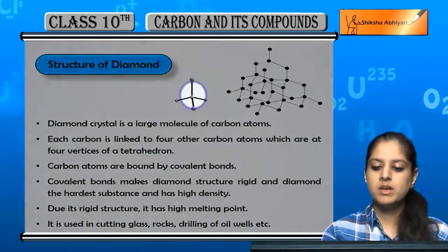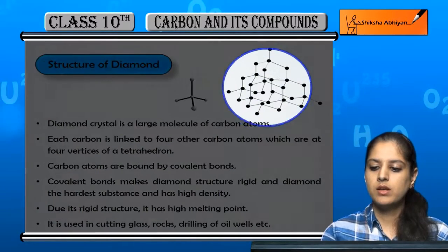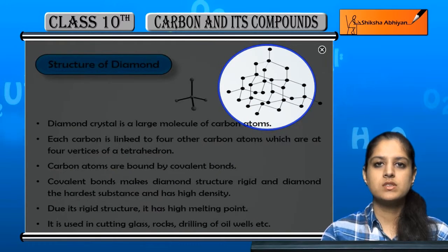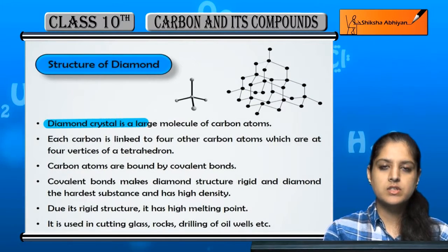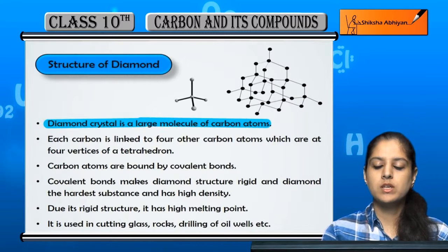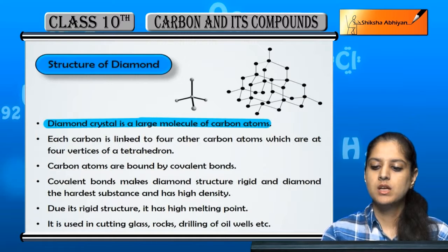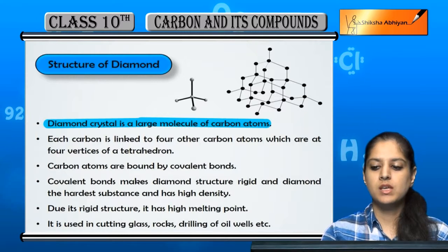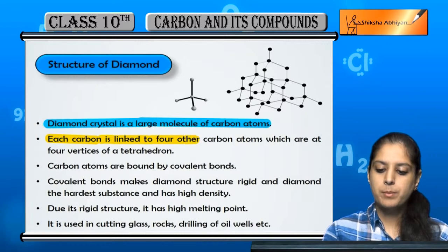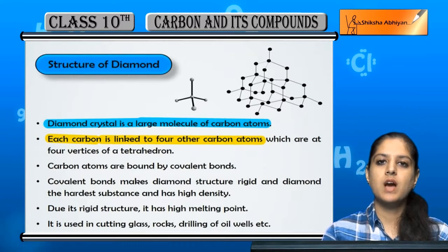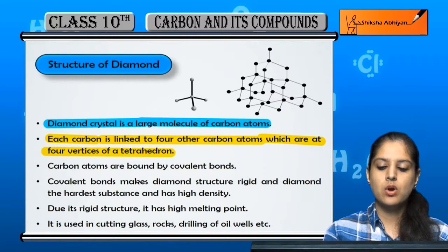Diamond's structure looks like this. This is a single molecule of diamond. A diamond crystal is a large molecule of carbon atoms. You can see a whole bunch of carbon atoms — these black balls are the carbon atoms.